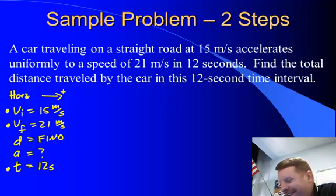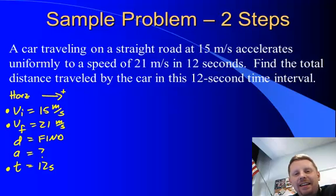Now the trick here is we don't have any equations that have just VI, VF, D, and T in it. Well, what do we do? Why don't we solve for A first, then we can go solve for our displacement. So, to solve for A first, we've got VI, VF, and T. Let's use VF equals VI plus AT.